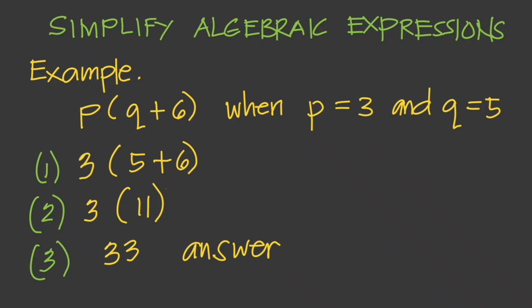The first form of simplifying expressions is used when we know what number each variable in the expression represents. If we know what they represent, we can just replace or substitute the variable with the equivalent number, and then simplify what remains using the order of operations. Don't forget PEMDAS — the order of operations, which we previously discussed in another video.